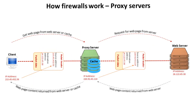A proxy is simply another physical computer which is placed between a network and a remote source. In this way all traffic must pass through this computer on its way both in and out of a network. In many ways this acts much like a firewall, and often a proxy is configured as a hardware firewall.